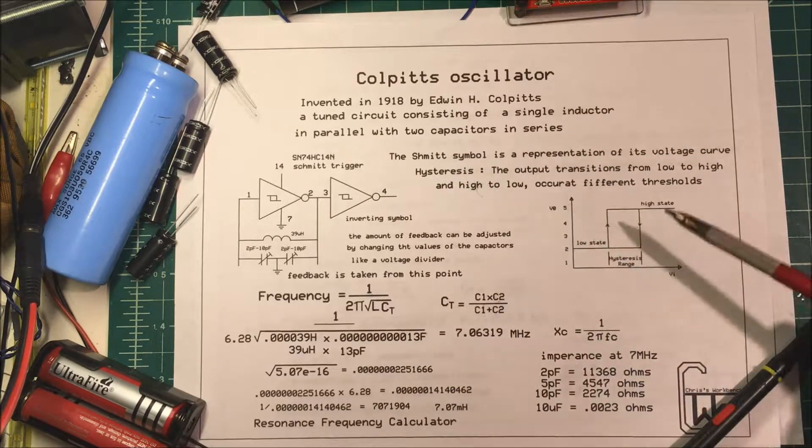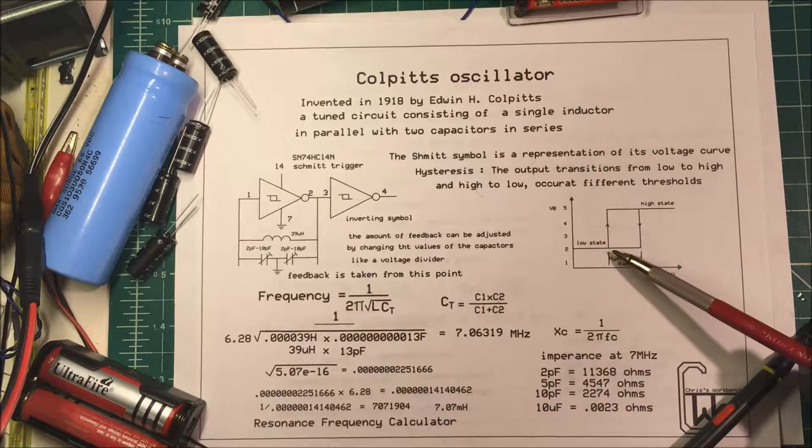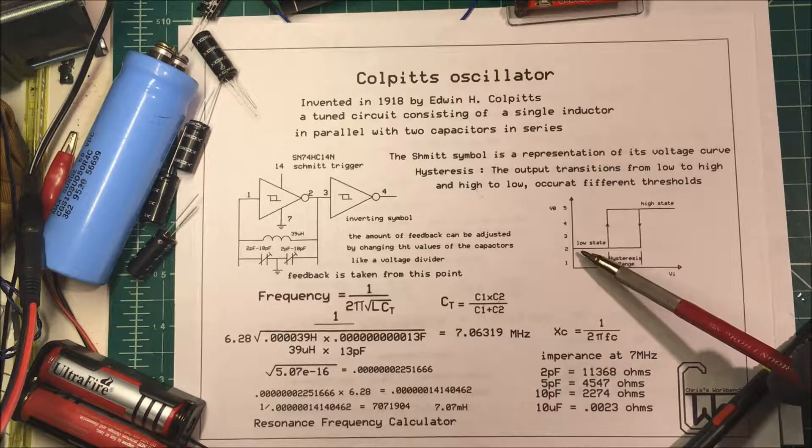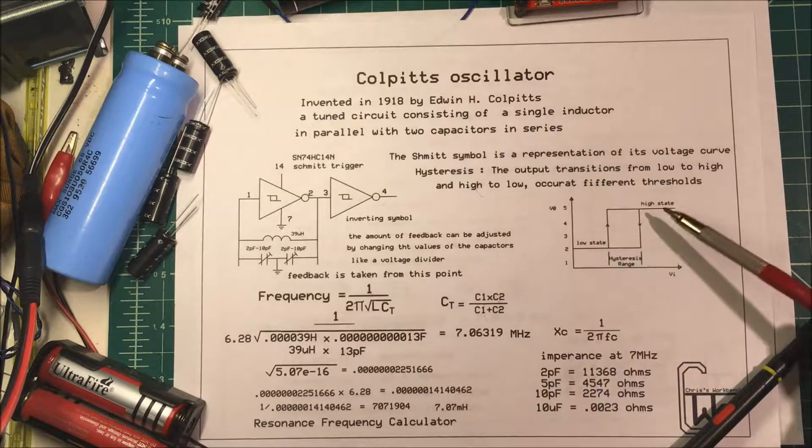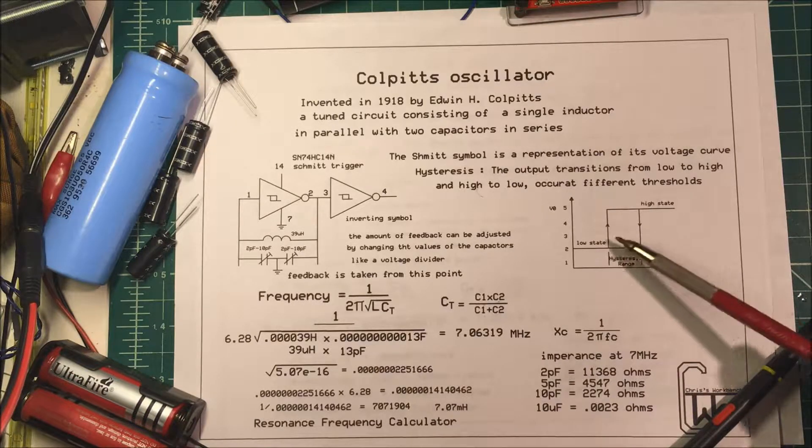Now these Schmidt triggers have hysteresis and here's the voltage curve for a non-inverting Schmidt trigger. So the output transitions from low to high and from high to low at different thresholds and that's your hysteresis range.